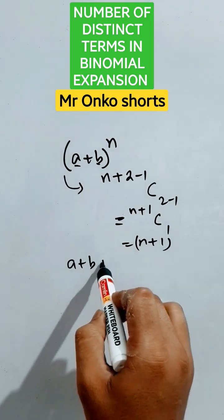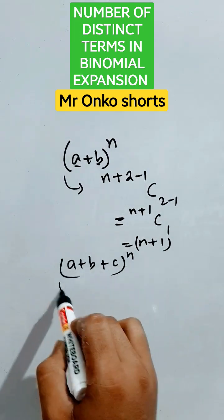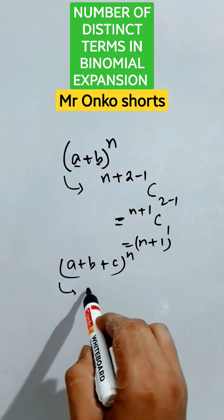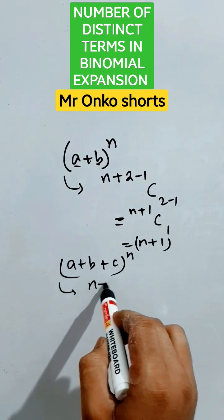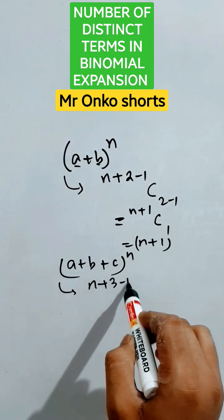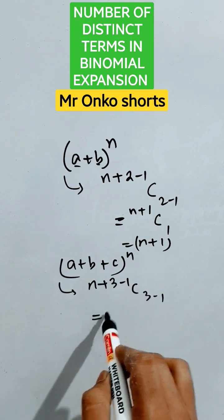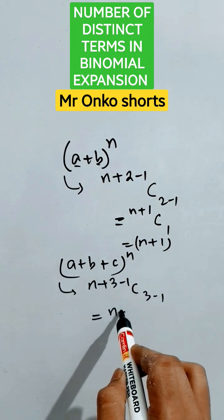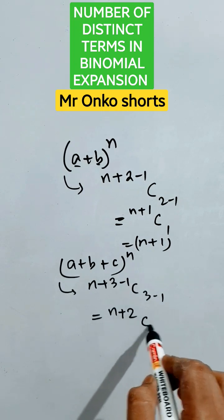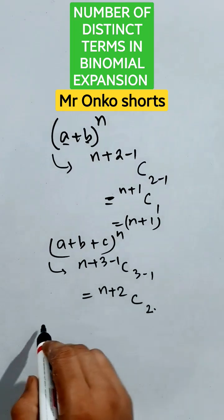If it is (a + b + c) whole to the power n, then the number of terms will be n+2C2.